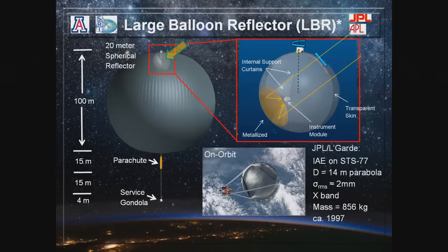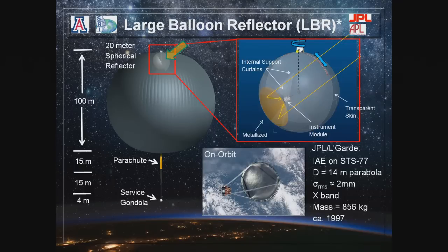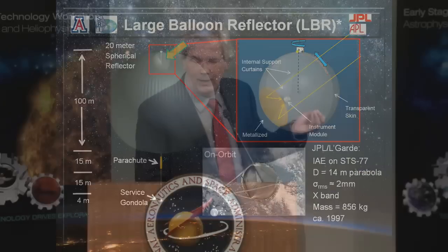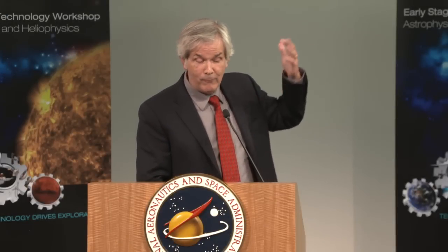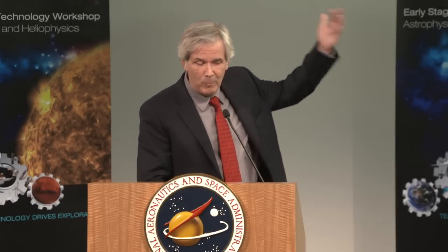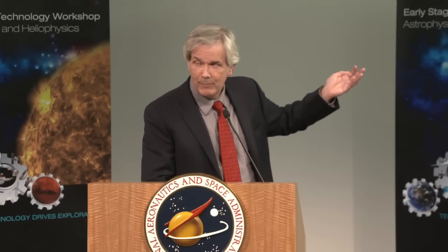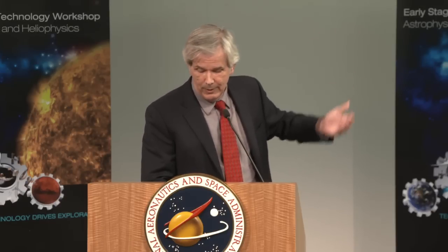The idea of using inflatable telescopes is not new — it's been tried and it works to some extent. This is a picture of a parabolic inflatable reflector from STS-77, a 14-meter parabola. Parabolas are great because they have a single focal point, which is what you want for your detectors. But it's difficult to maintain the surface figure of a parabola to high accuracy beyond 10 gigahertz. To reach 557 gigahertz or two terahertz, you can't hold the parabolic shape easily. A sphere is a more natural thing to use.